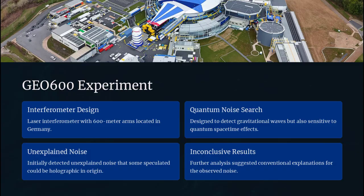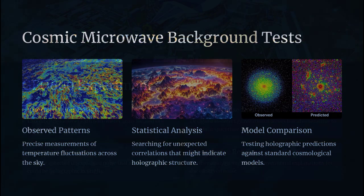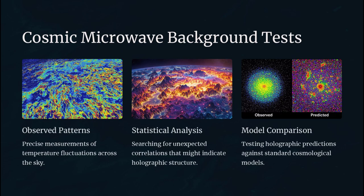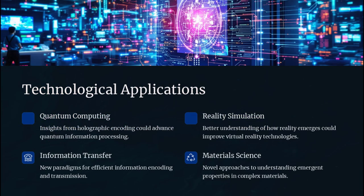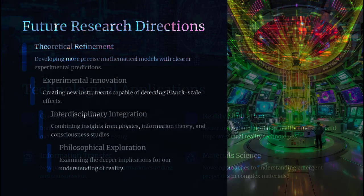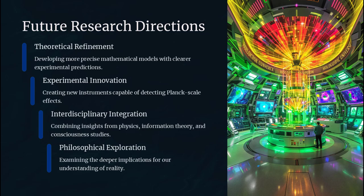Ultimately, the holographic shadow theory paradox invites us to question the very substrate of reality. It suggests that what we perceive as three-dimensional solidity might be an emergent illusion, a shadow play cast by fundamental bits inscribed at the edge of the cosmos. Whether this vision proves true or not, grappling with its implications pushes the frontiers of physics, forcing us to refine our understanding of space, information, and the deep unity between gravity and quantum mechanics.